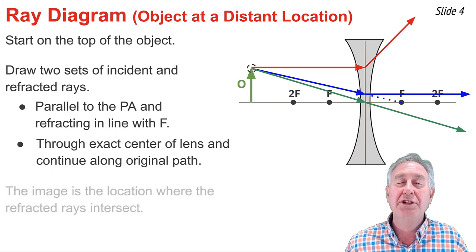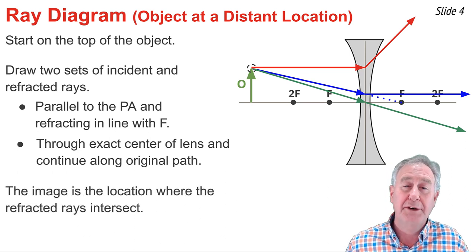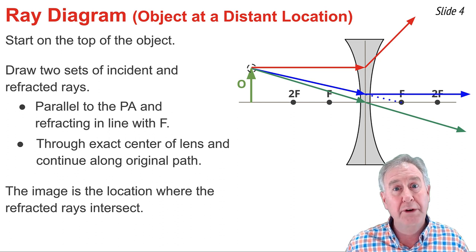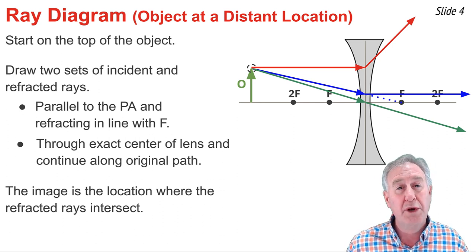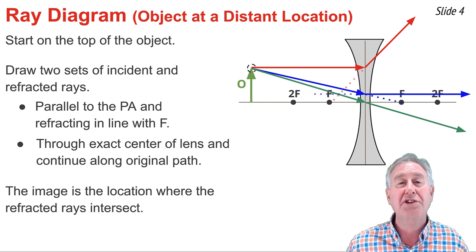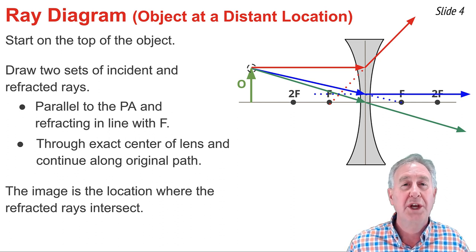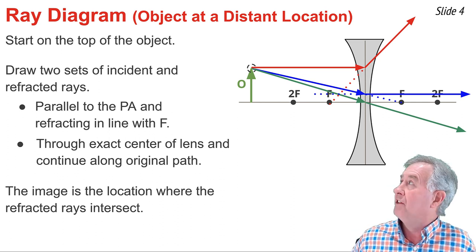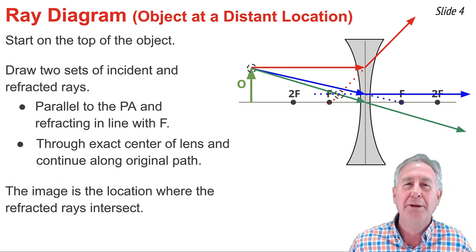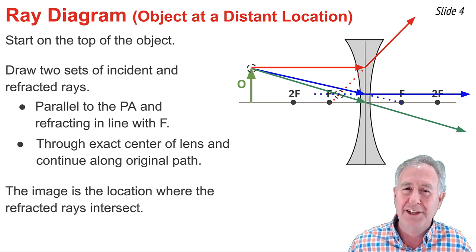The image is located where the three refracted rays intersect. But the three refracted rays are diverging — spreading apart from one another — so they won't intersect on the opposite side of the lens. To find their intersection point, you trace these three refracted rays backwards to the object side of the lens where they intersect. The intersection point is located between the focal point and the lens.